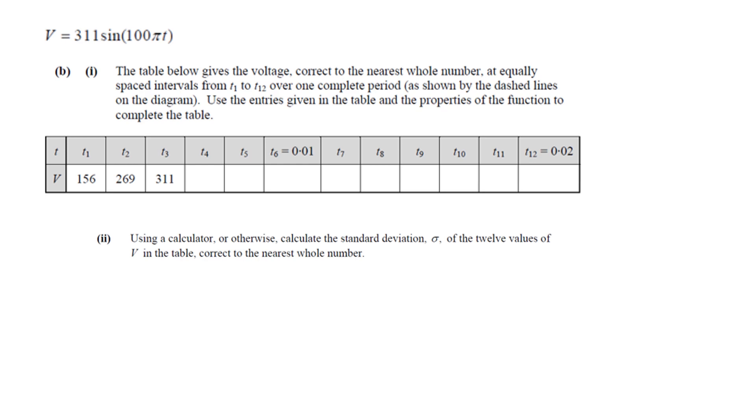So part BI. The table below gives the voltage correct to the nearest whole number at equally spaced intervals from T1 to T12 over one complete period as shown by the dashed lines on the diagram. Use the entries given in the table and the properties of the function to complete the table. So we can just do a little bit of substitution in our calculator and we get 269, 311, 269.